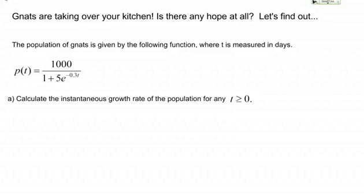P of T equals 1,000 over 1 plus 5e to the negative 0.3T. Once again, T here just represents time measured in days. For example, if I plugged in 5 to this function, that would give me the population of gnats on day 5. Part A asks us to calculate the instantaneous growth rate of the population for any time point greater than or equal to 0.